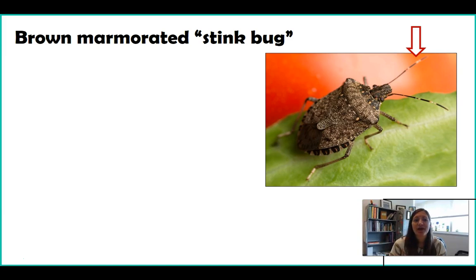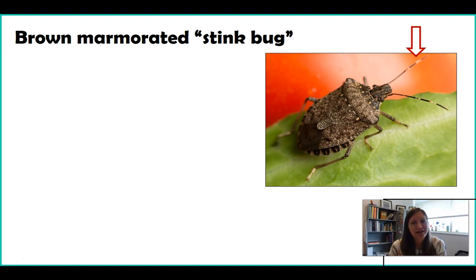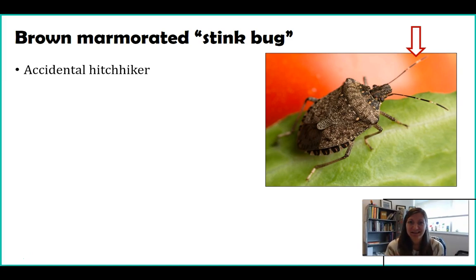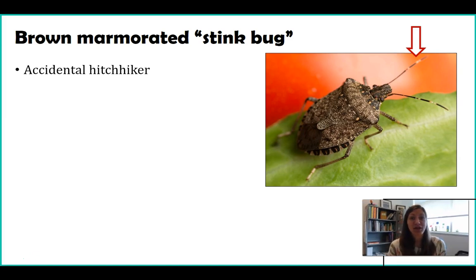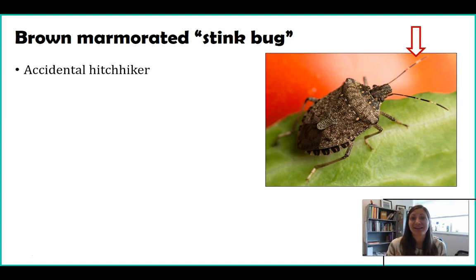The brown marmorated stink bug is fairly new to this area. It was introduced in the 90s, made its way down to Maryland in the 2000s, and that's when their populations exploded. One reason they've exploded is they don't really have natural predators, and being an insect they're also reproducing a lot. They were introduced accidentally — no one wanted to bring them over on purpose. We think they came over in shipping crates from Asia, where they are found naturally. Some eggs or insects were in crates on a barge and first landed in the Pennsylvania area, and from there their populations just went wild with nothing limiting them.